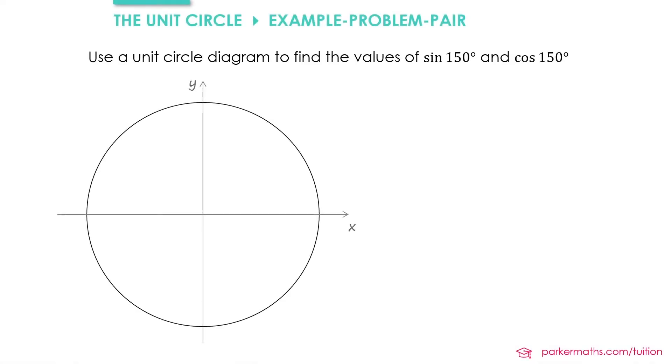In this example, I'd like to start us on a journey of looking at angles of theta that are not between 0 and 90. In this case, we're going to look at sin 150° and cos 150°.